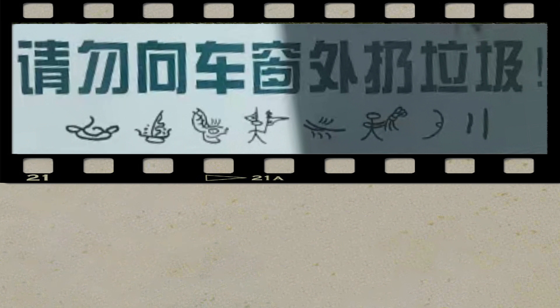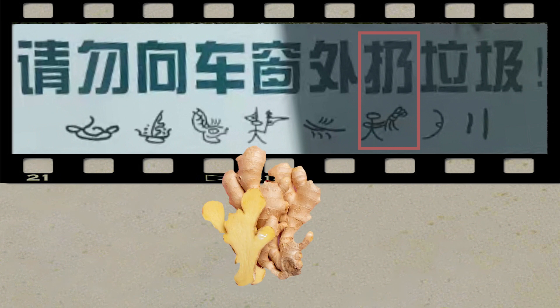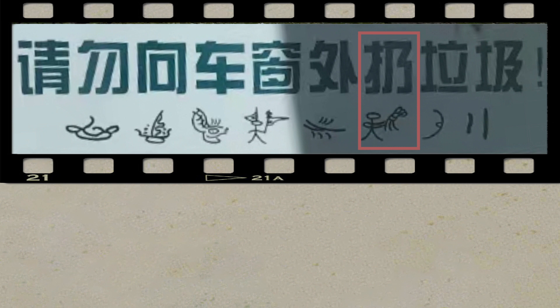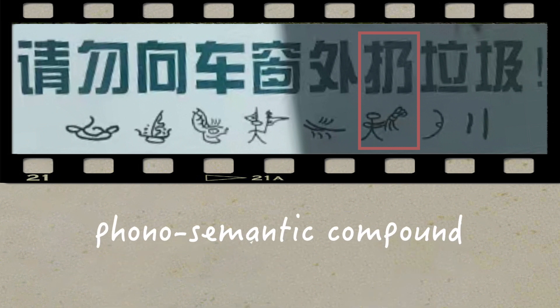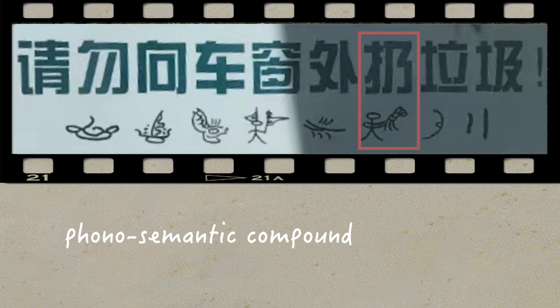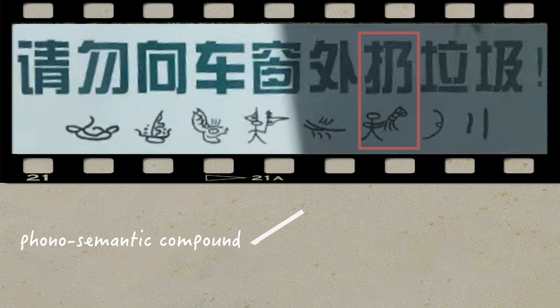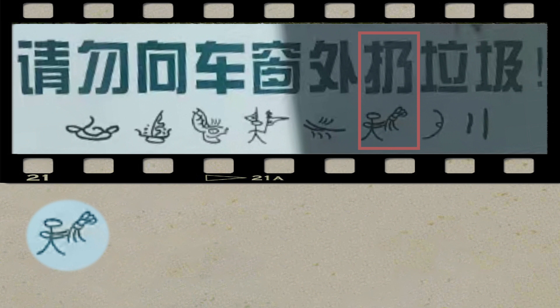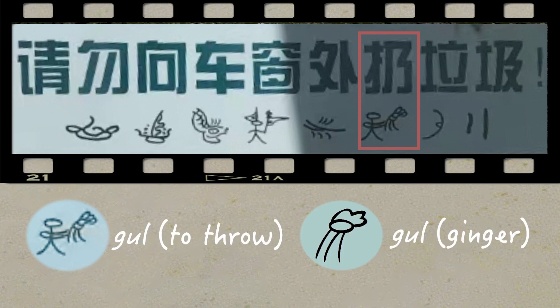The most interesting graph is definitely the verb 'throw.' It's a figure throwing a piece of ginger away. Why ginger, you ask? Well, this is an example of a phonosemantic compound — a kind of graph that has two primary components: one that gives a clue to the meaning, and one that gives a clue to the pronunciation. In this case, the graph is 'gu,' meaning 'to throw,' and the word for ginger has the same pronunciation.